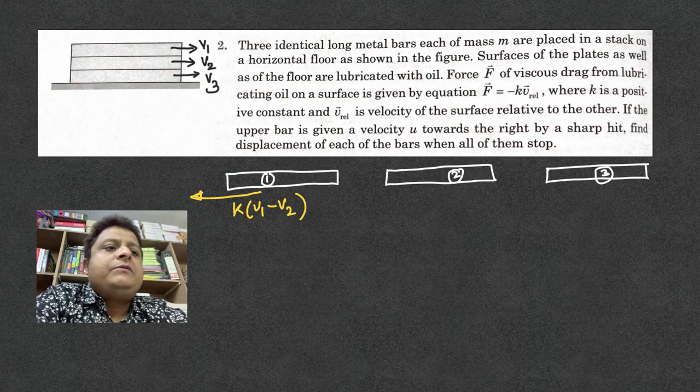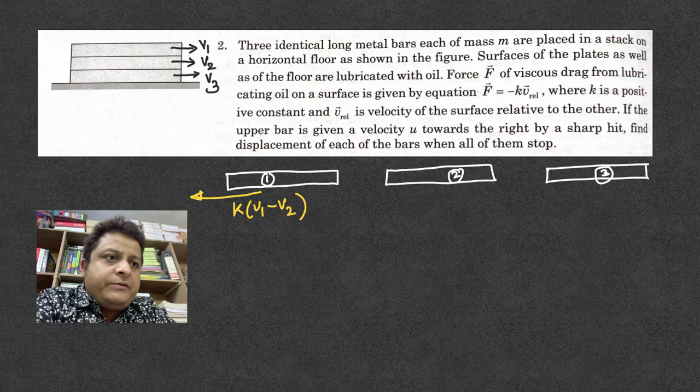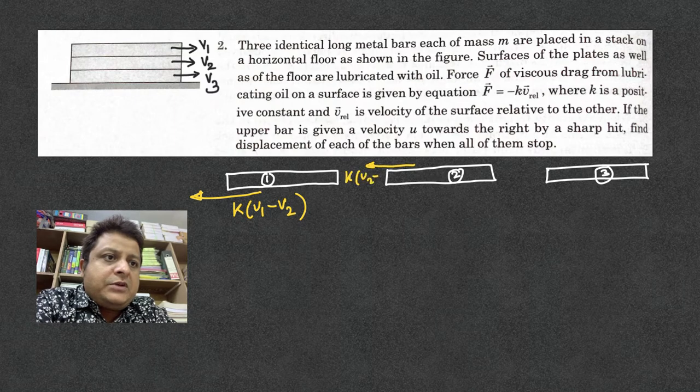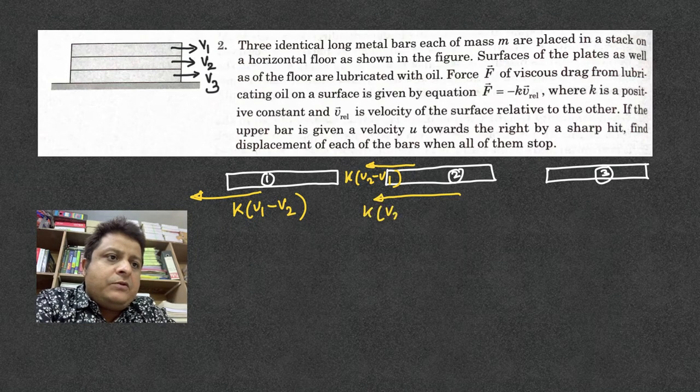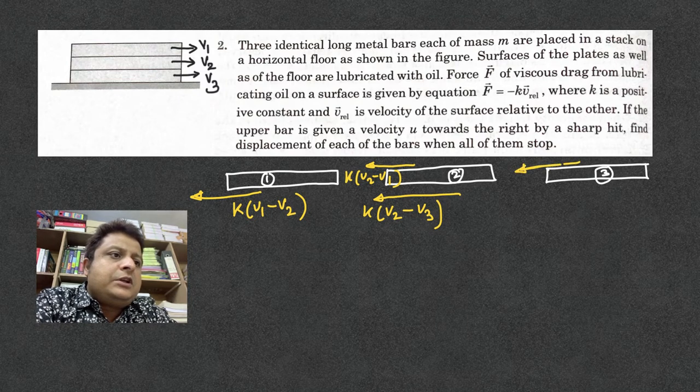On bar two, with respect to v2, the upper force is k into v2 - v1, and there the force will be k into v2 - v3. On two, on the upper surface of two, the force is k times v2 - v1.